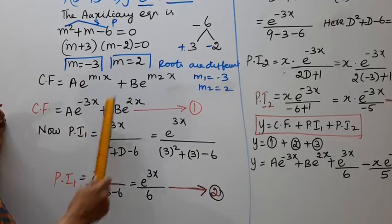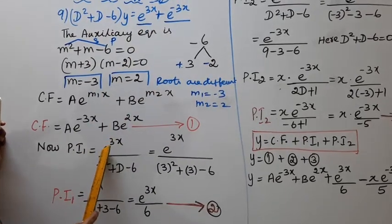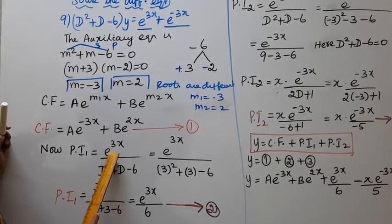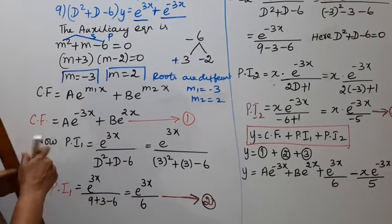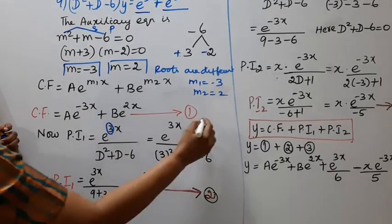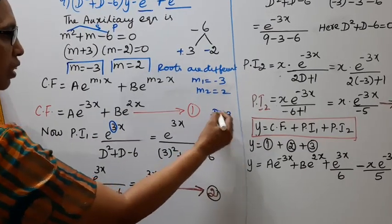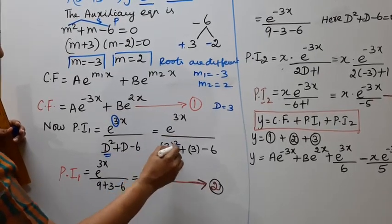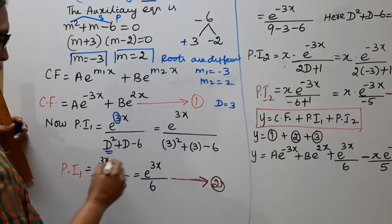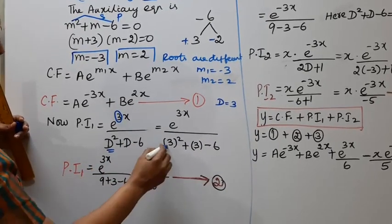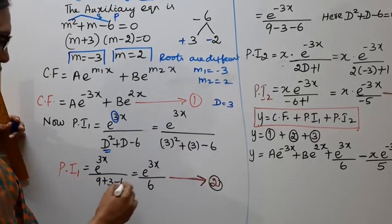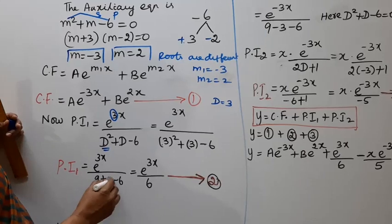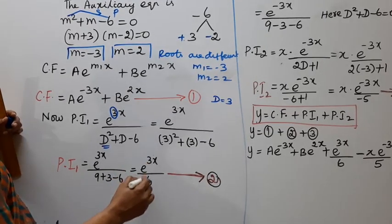For particular integral 1, we take e^(3x) divided by (D² + D − 6). Since the numerator is exponential e^(3x), we replace D with 3: e^(3x) divided by (3² + 3 − 6) = e^(3x) divided by (9 + 3 − 6).